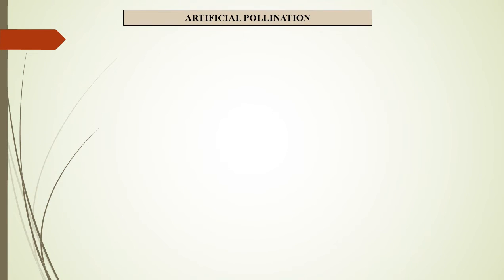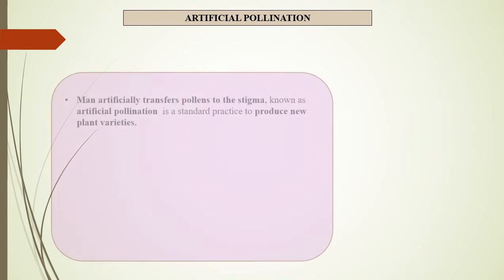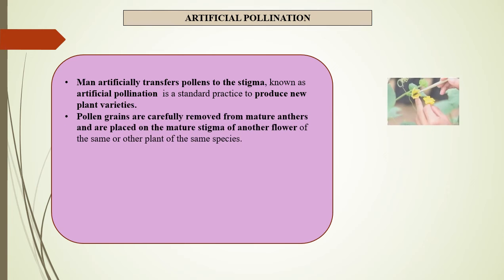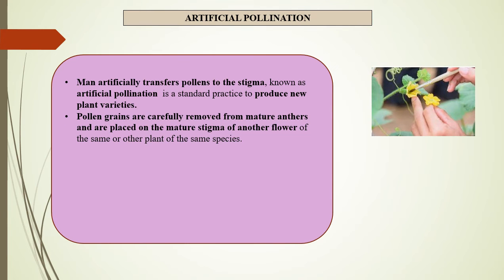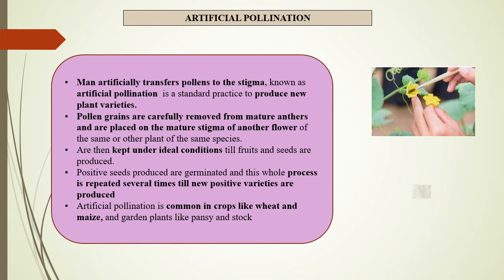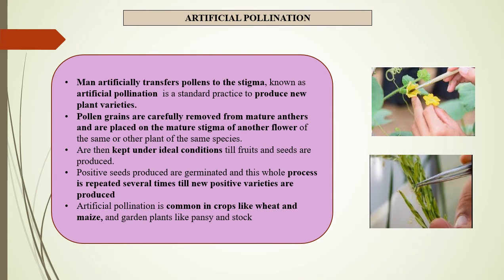Artificial pollination: Sometimes, man artificially transfers pollen to the stigma — this is known as artificial pollination. Pollen grains are carefully removed from mature anthers and placed on the mature stigma of another flower of the same plant or another plant of the same species. These are then kept under ideal conditions until fruits and seeds are produced. The seeds produced are germinated and this whole process is repeated several times until new positive varieties are produced. Artificial pollination is common in crops like wheat and maize and garden plants like pansy and stock.